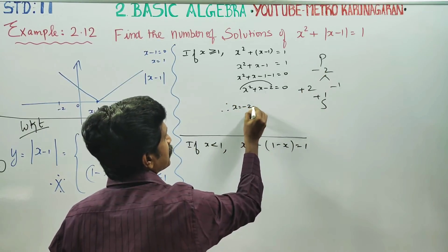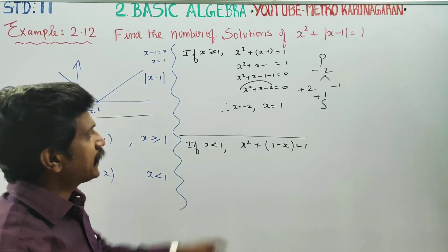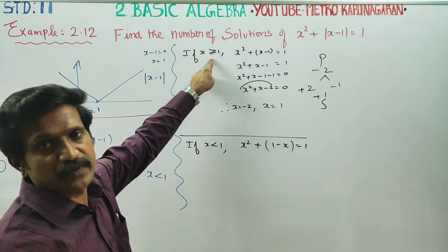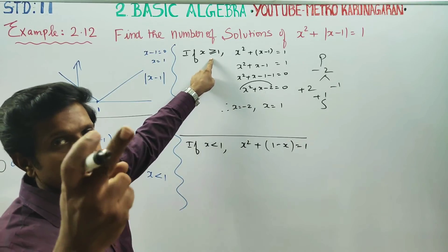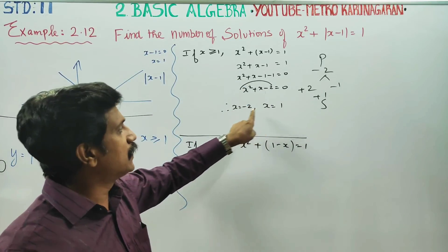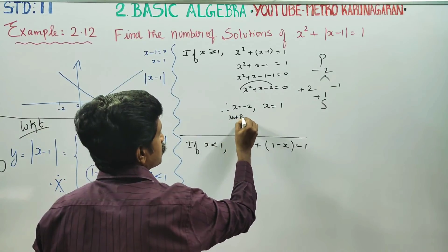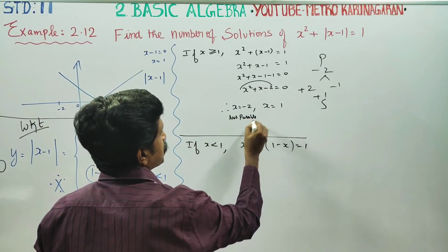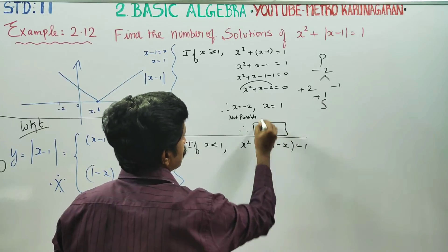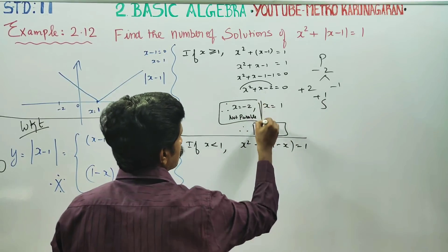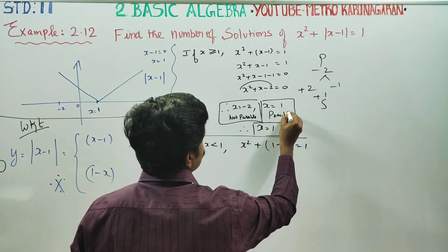Therefore x equals minus 2 and x equals 1. But x equals minus 2 is not possible because the condition is x greater than or equal to 1, so minus 2 is not allowed. x equals 1 is allowed and is the possible answer.